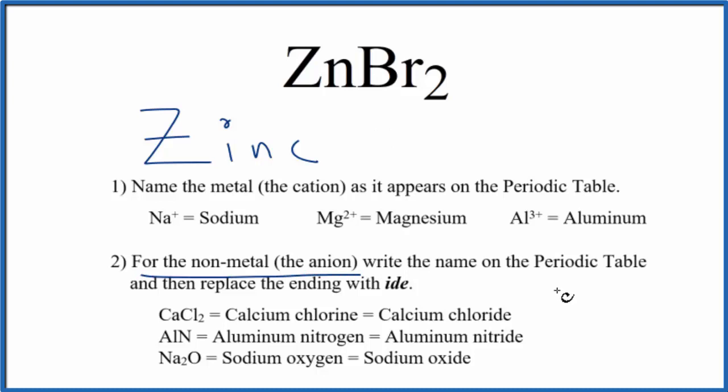Then we write the name for the non-metal as it appears on the periodic table. So we have bromine, and we write lowercase b. From here, we'll replace the ending with ide. So we cross this out and write ide.